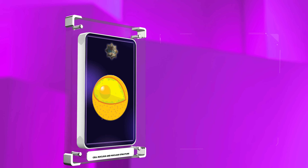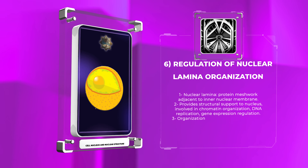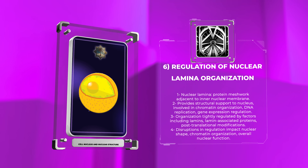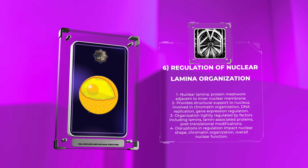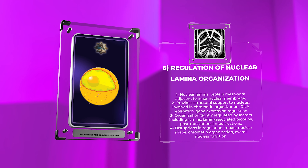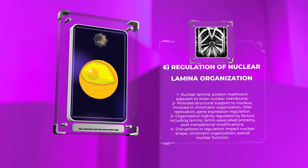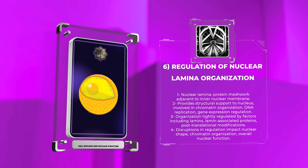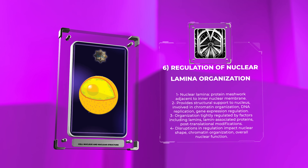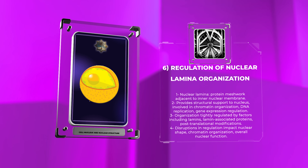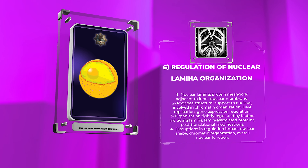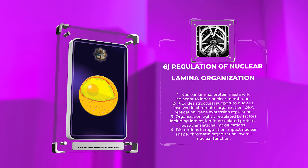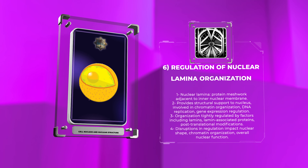The nuclear lamina is a protein meshwork located adjacent to the inner nuclear membrane. It provides structural support to the nucleus and plays a role in chromatin organization, DNA replication, and gene expression regulation. The organization of the nuclear lamina is tightly regulated by various factors, including lamins, lamin-associated proteins, and post-translational modifications. Disruptions in this regulation can impact nuclear shape, chromatin organization, and overall nuclear function. Understanding the mechanisms underlying the regulation of the nuclear lamina is essential for uncovering new insights into nuclear organization and associated pathologies.